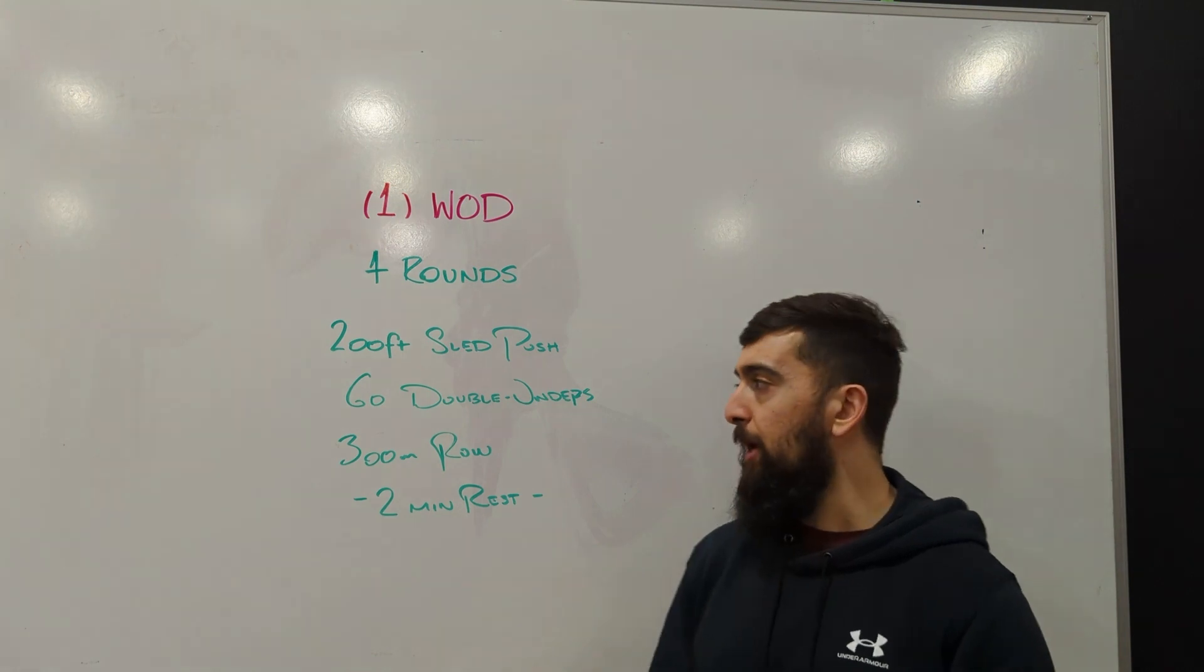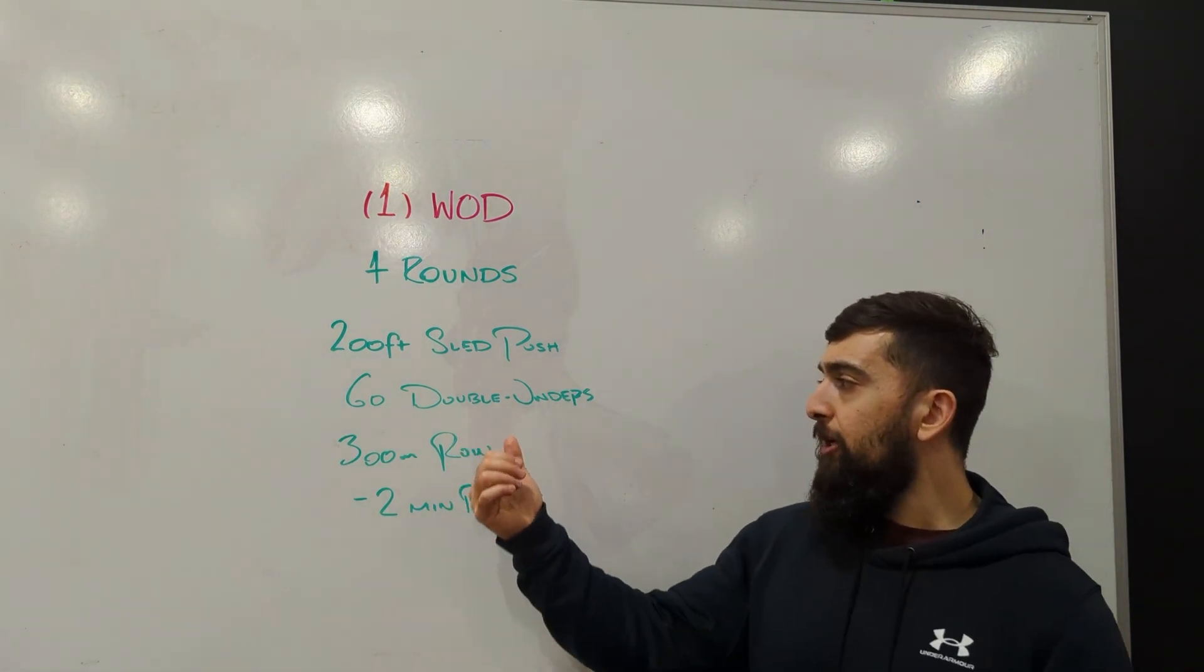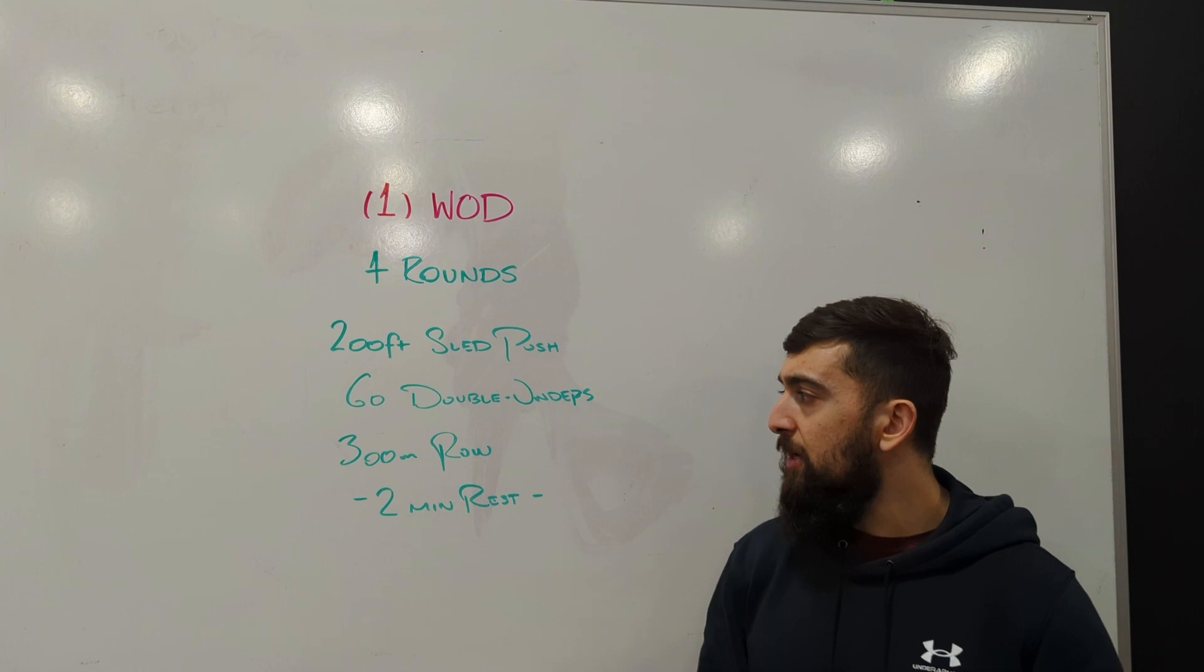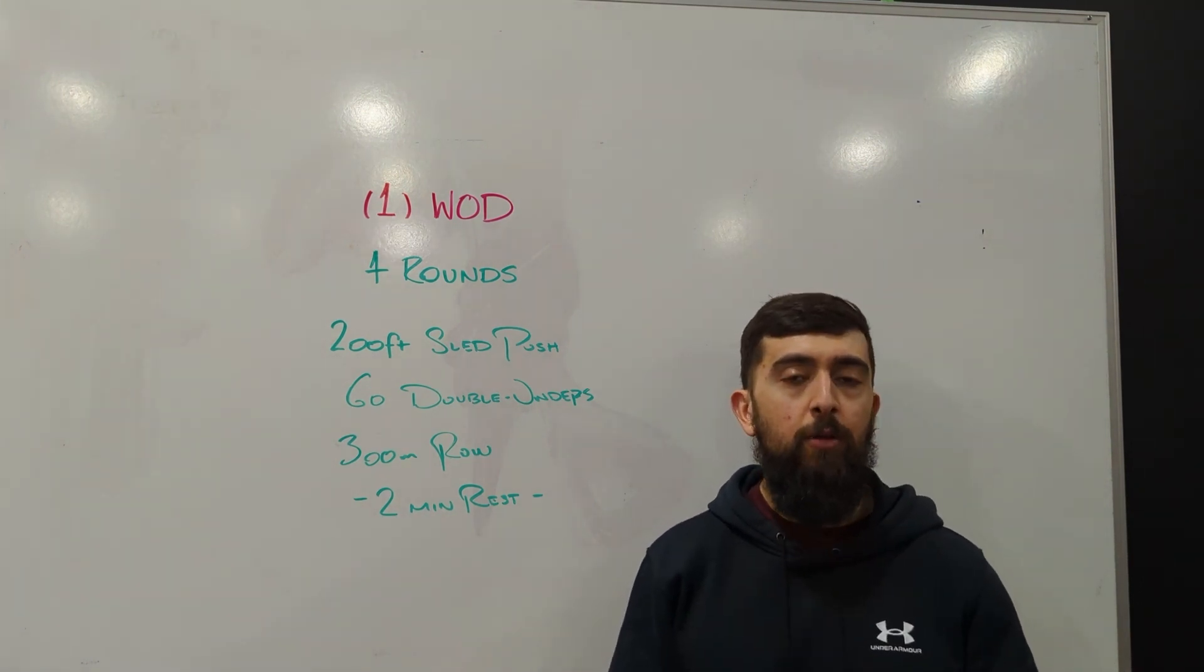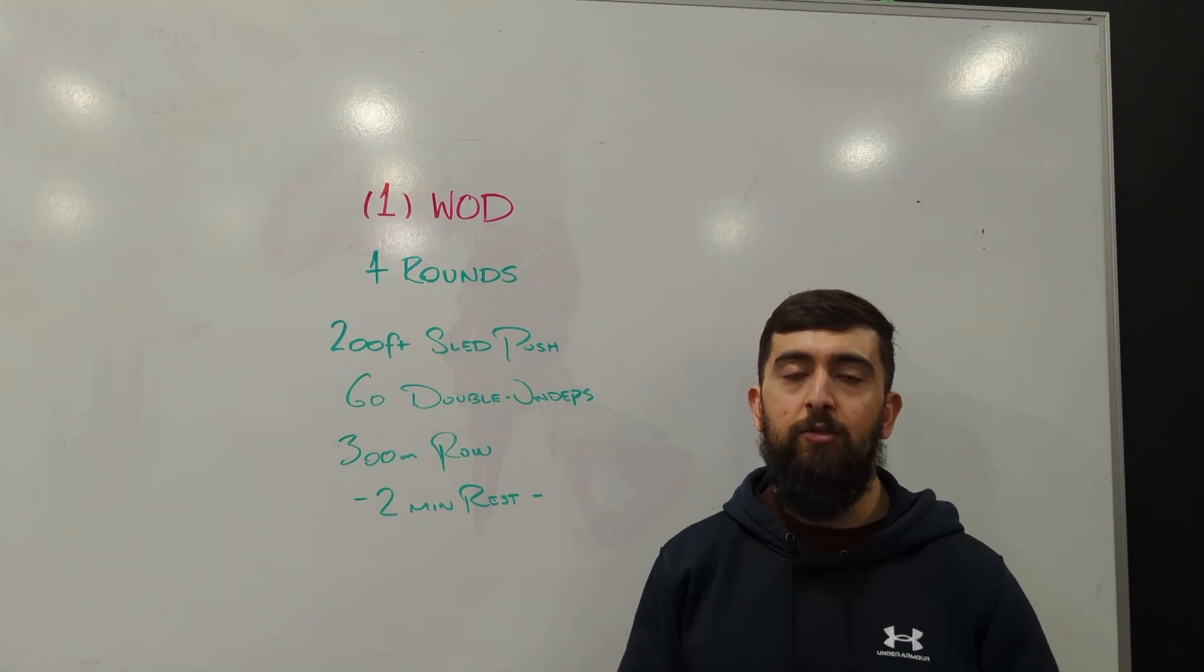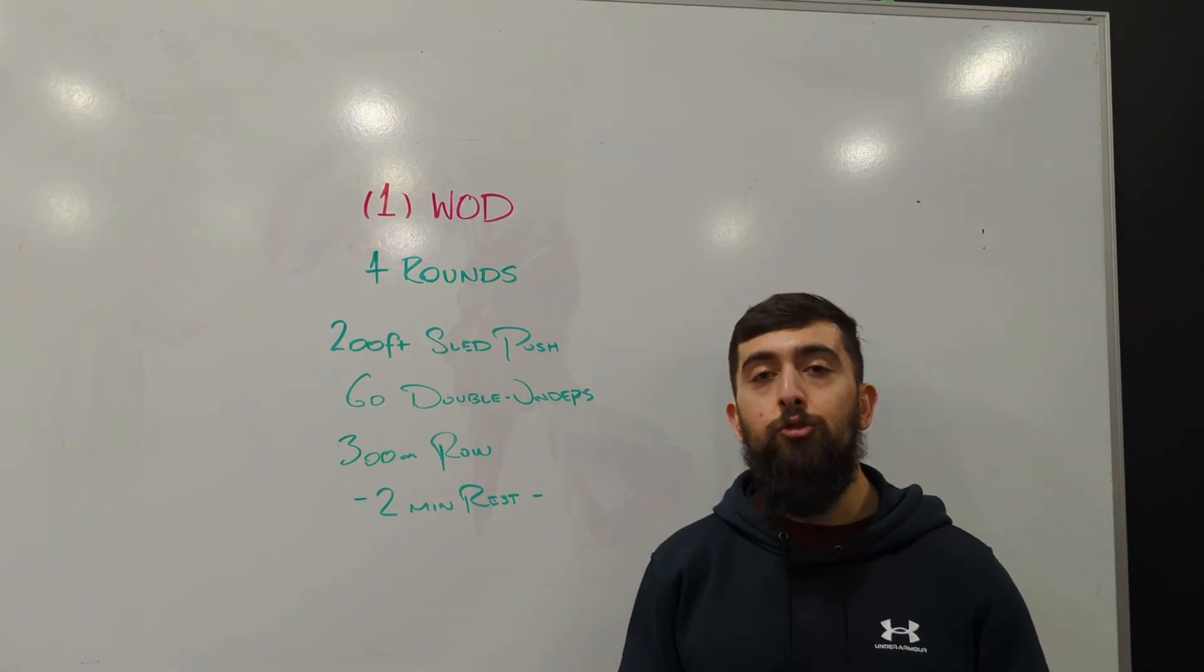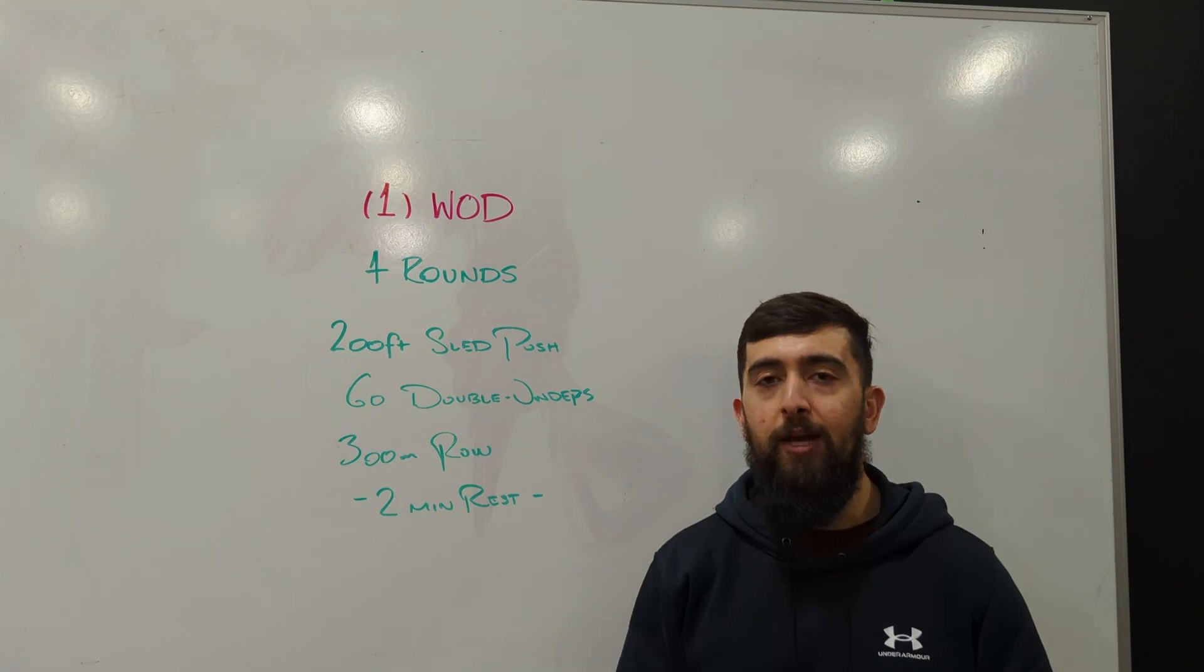For the ladies, one 45-pound plate. 60 double unders and then 300 meter row - more of your cardio movements there. Just keeping a consistent pace per round is going to be key to getting the best out of this workout today. Hope you guys enjoy this one and we'll see you tomorrow for the next one.